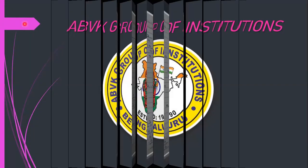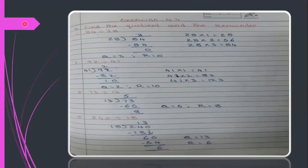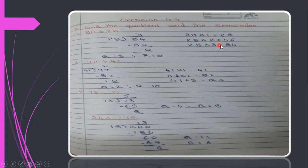Hello everyone. Last class we learned up to exercise 4.3, so now let us see exercise 4.4 — find the quotient and remainder. See 84 divided by 28. Write 28 outside and 84 inside. Since we don't know the 28 table, write it on the side. 28×3 is 84, so the quotient is 3 and remainder is 0.